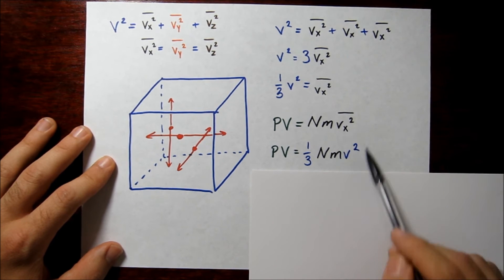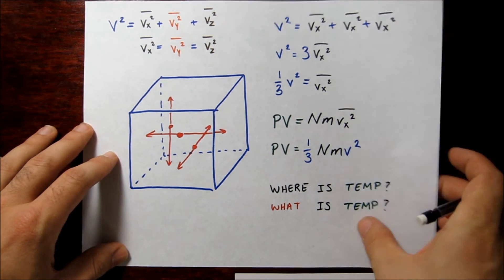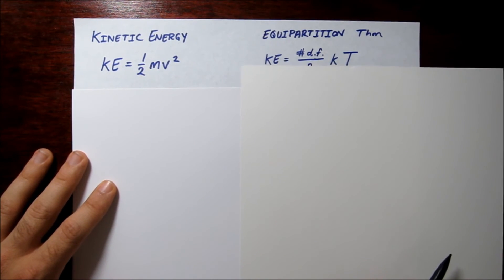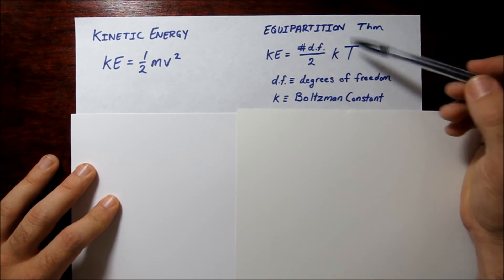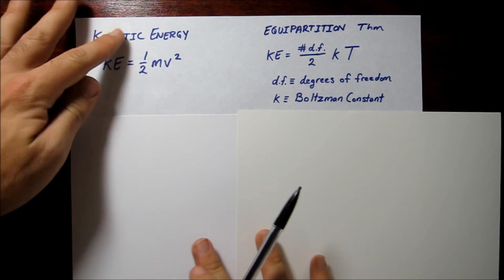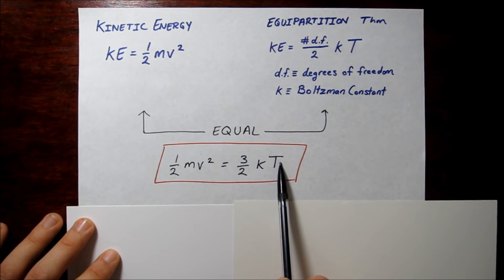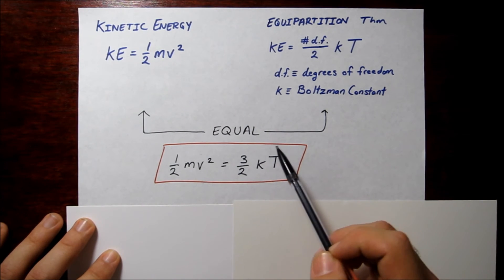We still need temperature. Thinking about kinetic energy: the classical expression from physics is one-half mv squared, and the equipartition theorem relates kinetic energy to temperature as the number of degrees of freedom divided by two times the Boltzmann constant k times temperature T. Setting these equal gives one-half mv squared equals three-halves kT, where three comes from the three degrees of freedom — the three directions the particle can move.